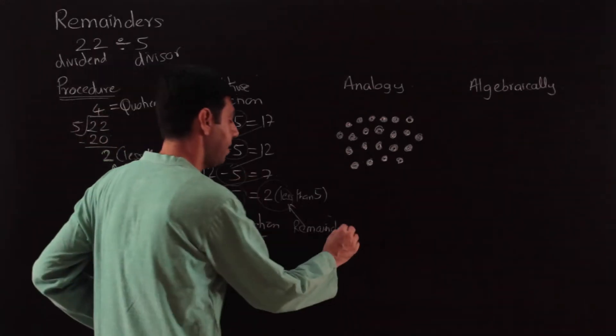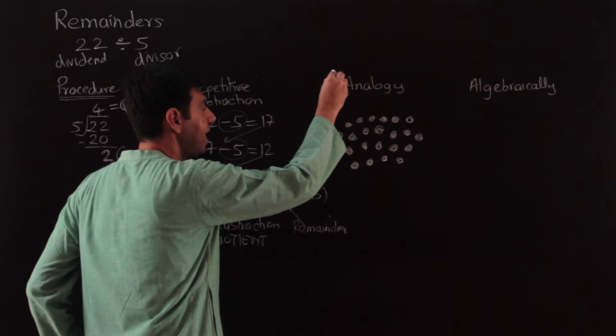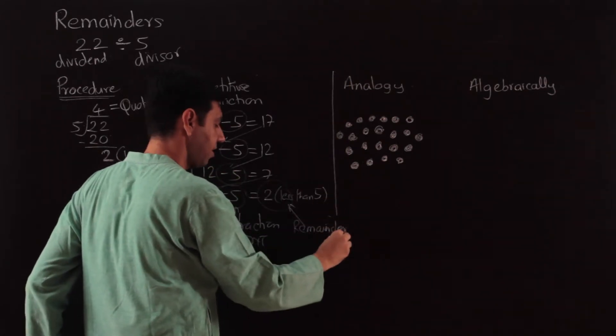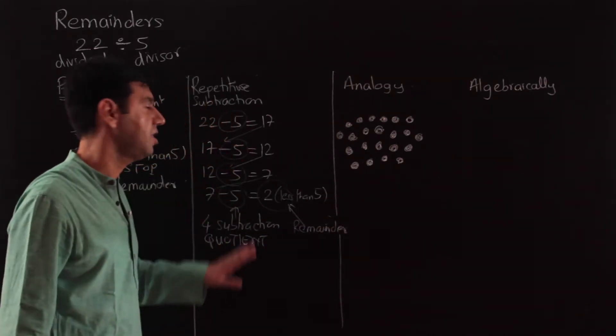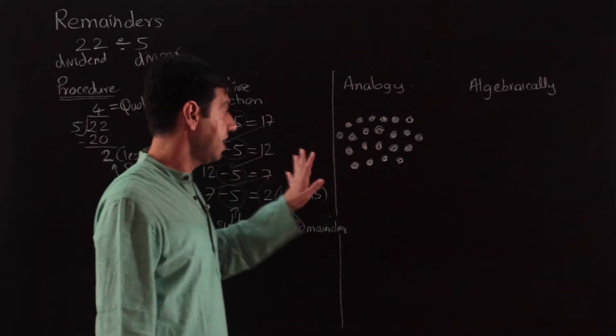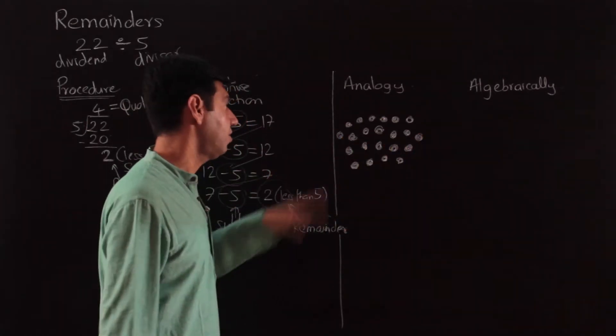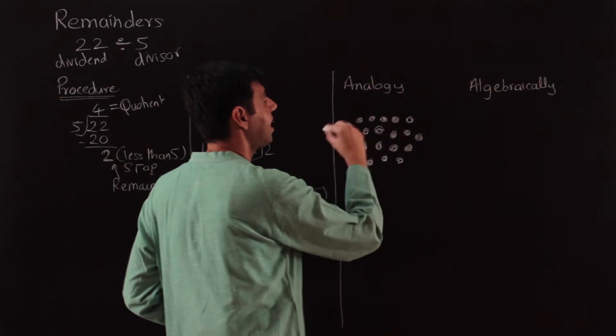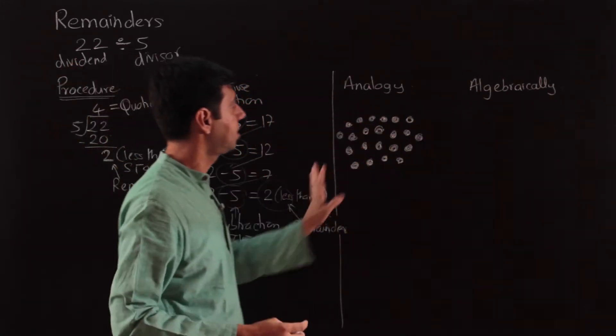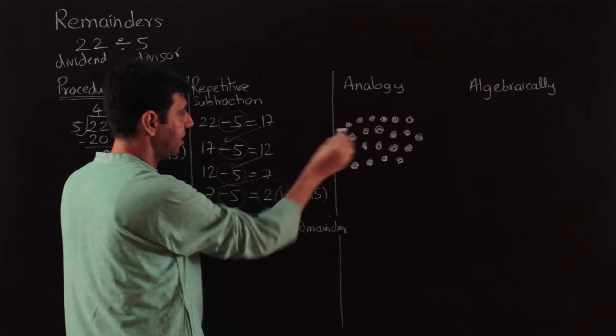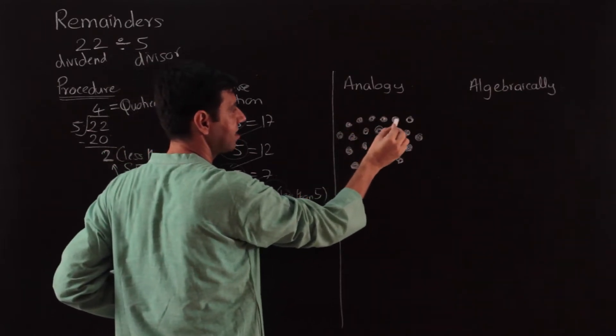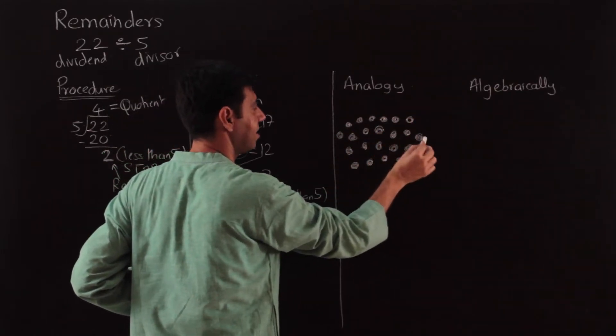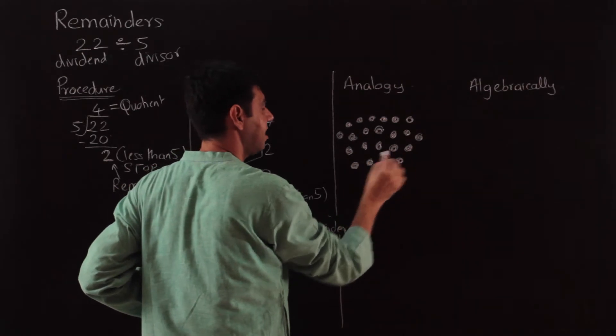Now we're going to use an analogy, and we'll use this analogy a lot at the beginning—I found it to be very useful. Think of it as we have 22 marbles, so these are your 22 marbles. Let me count them out: 1, 2, 3... 20, 21, 22. So there are 22 marbles.